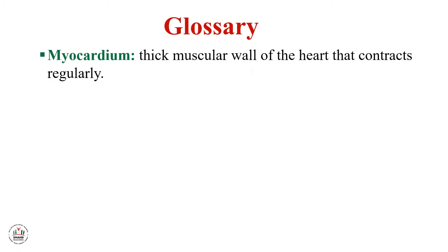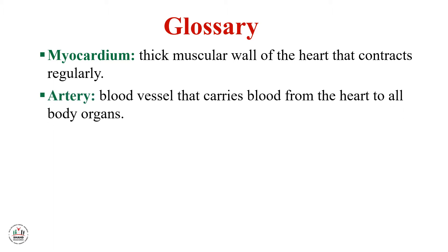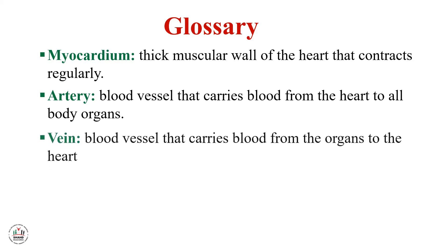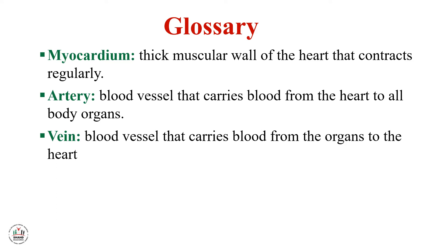Glossary terms: Myocardium is the thick muscular wall of the heart that contracts regularly. Artery is a blood vessel that carries blood from the heart to all body organs. Vein is a blood vessel that carries blood from the organs to the heart. So the artery and vein are opposites — both are blood vessels.